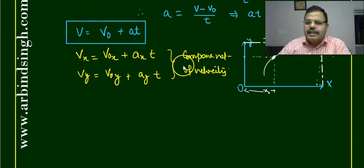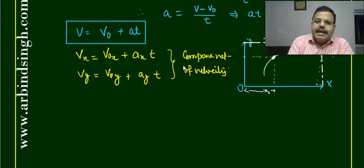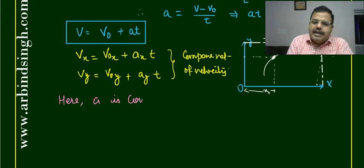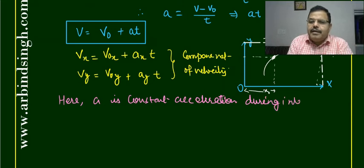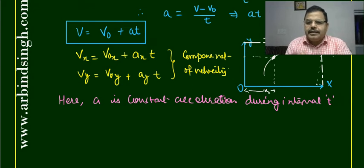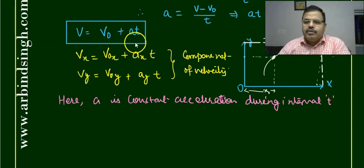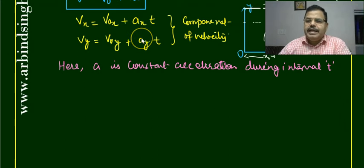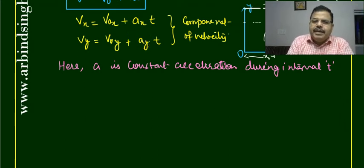Here, a is a constant acceleration during the time interval t. This is constant acceleration during the interval t. So in this way, we can calculate the acceleration of any particle. The first equation of motion is v = v₀ + at.